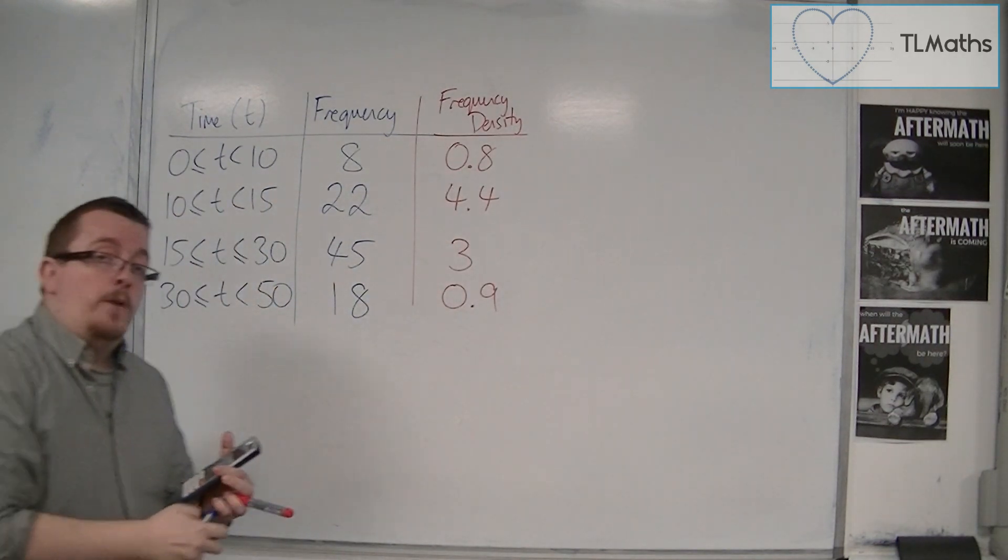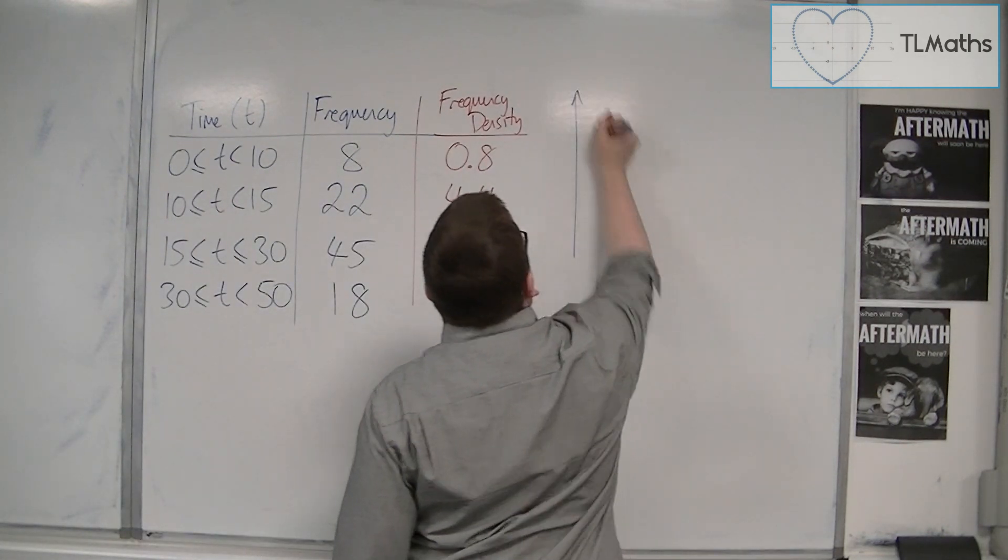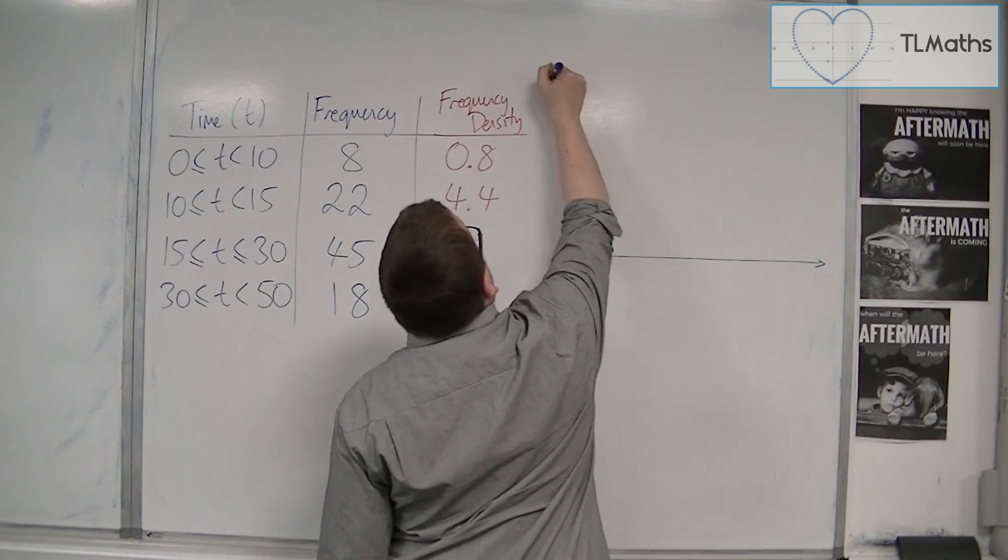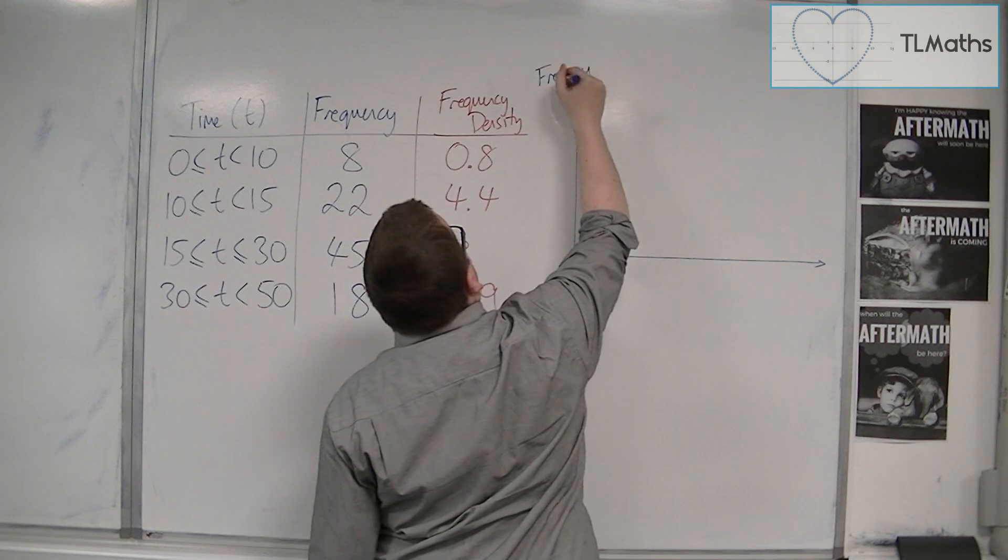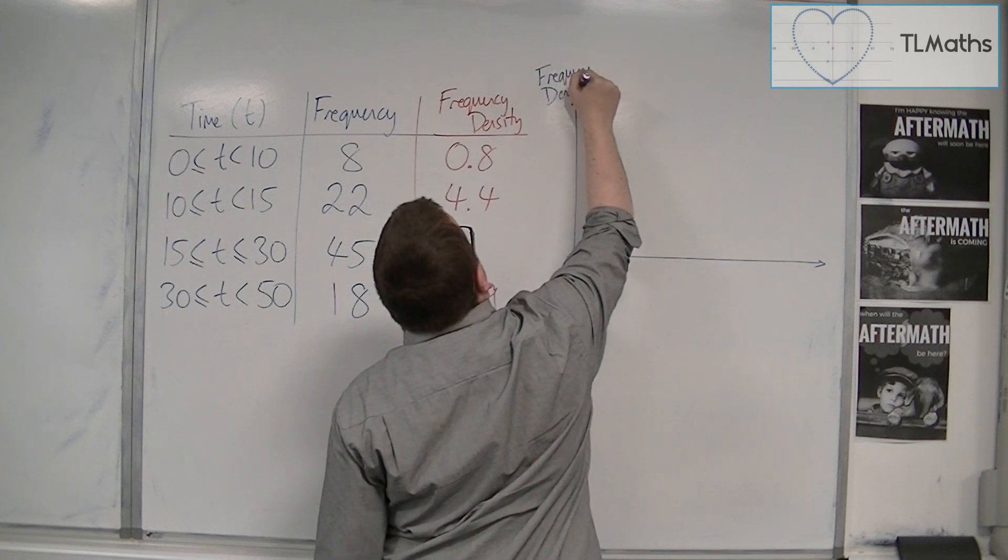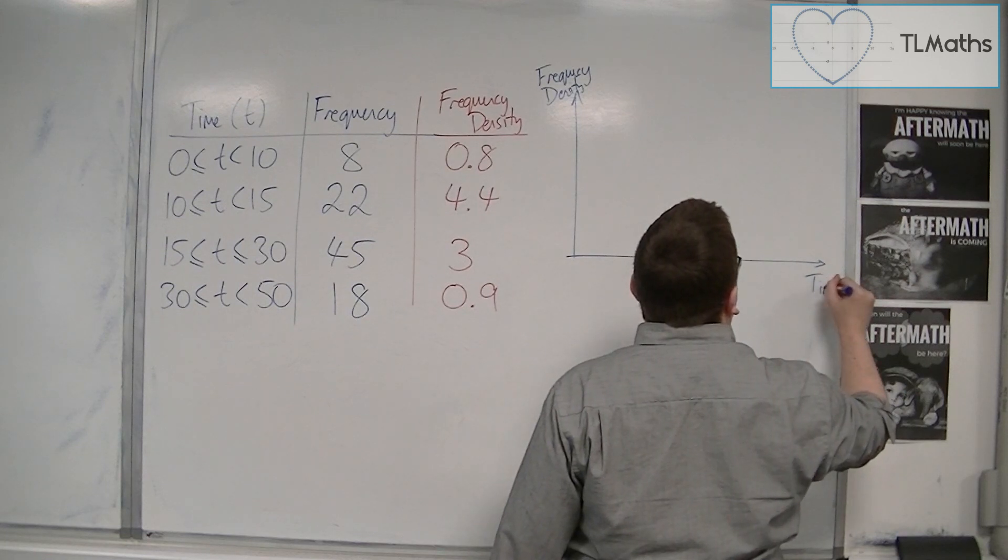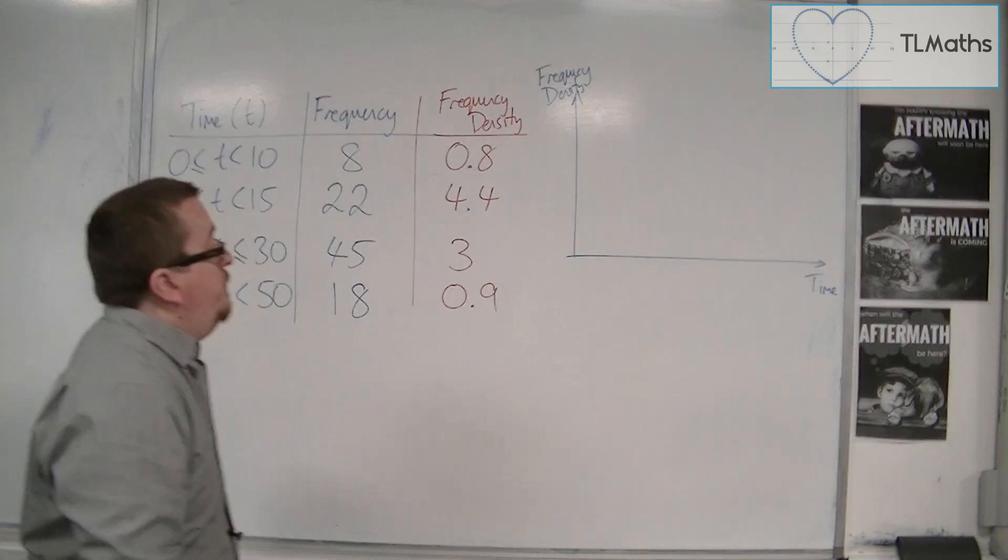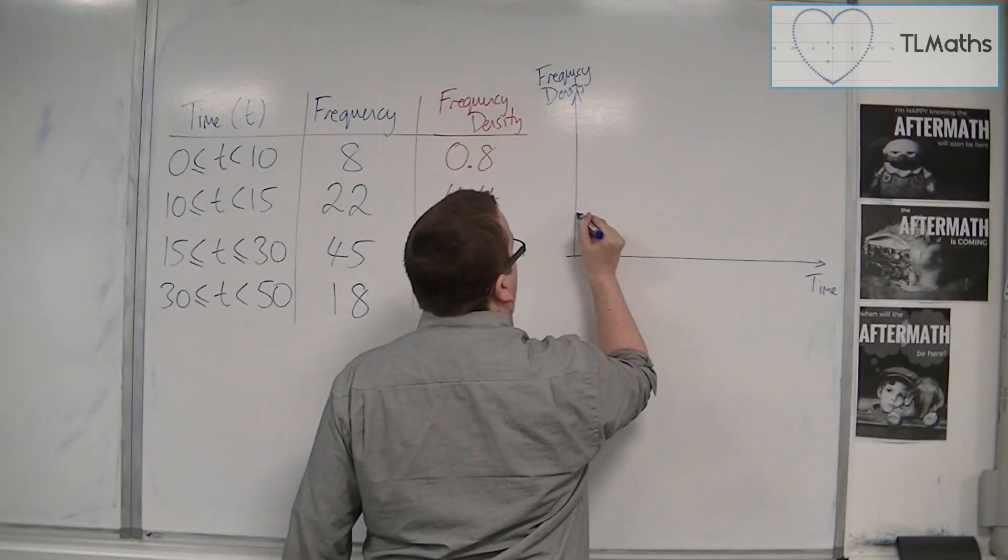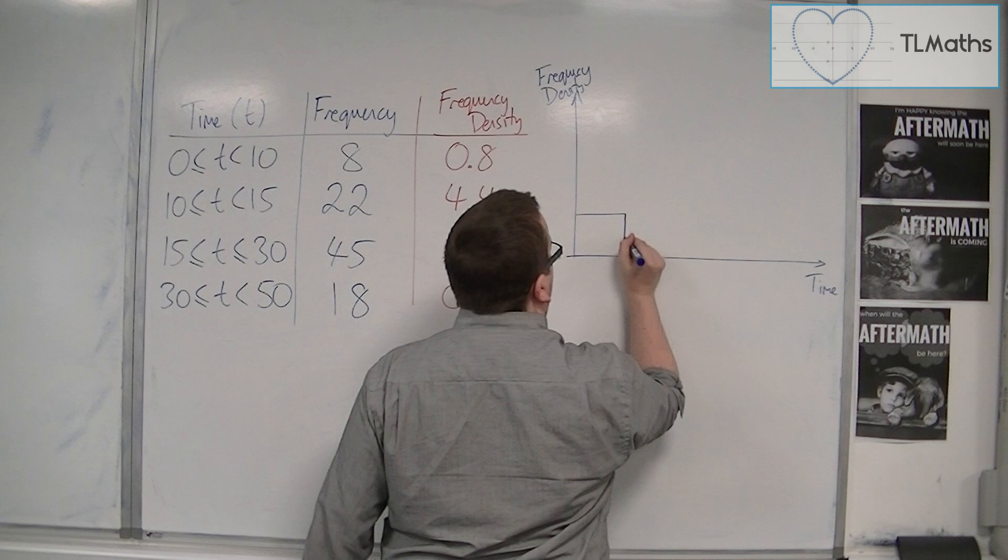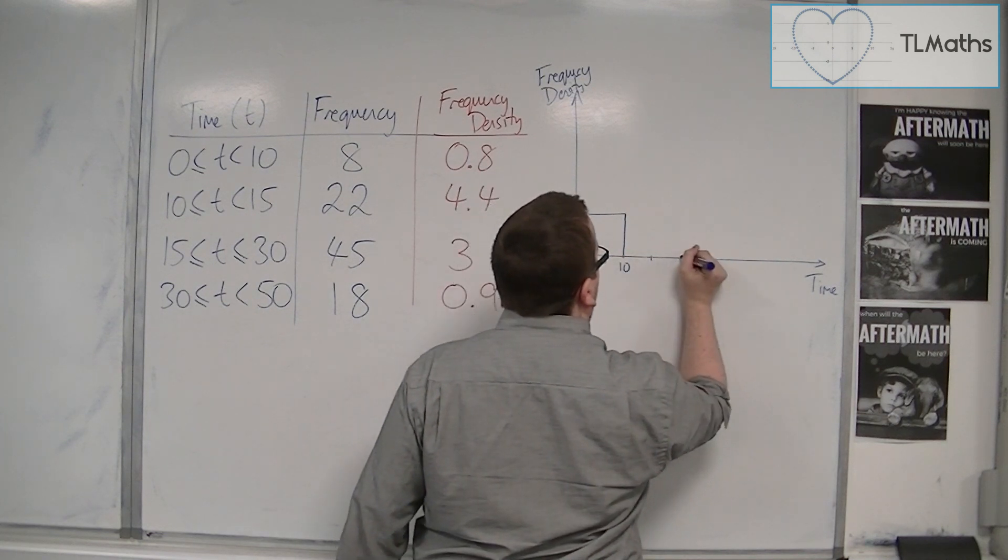Now let's see what that would look like graphically. So up here we would have frequency density. And along the bottom we're going to have time. So from 0 to 10 we're at 0.8.